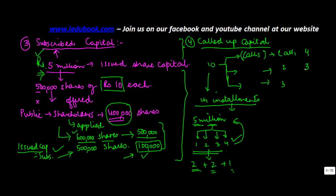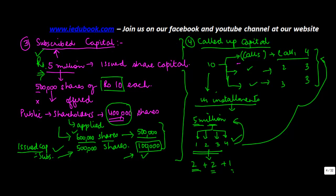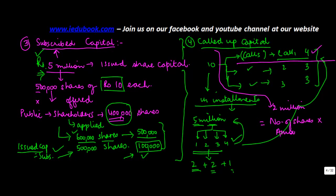The technical word used for these installments is calls. You may ask for 4 rupees, 3 rupees and 3 rupees, or any other combination. The company makes a call for 4 rupees and shareholders pay 4 rupees per share, then 3 rupees per share on the second call, then 3 rupees on the third call. So the amount of capital which the company has called at any stage — let's say only 4 rupees — gives 4 into 500,000 shares = 2 million. So the called up capital will be 2 million, which is number of shares into amount called.